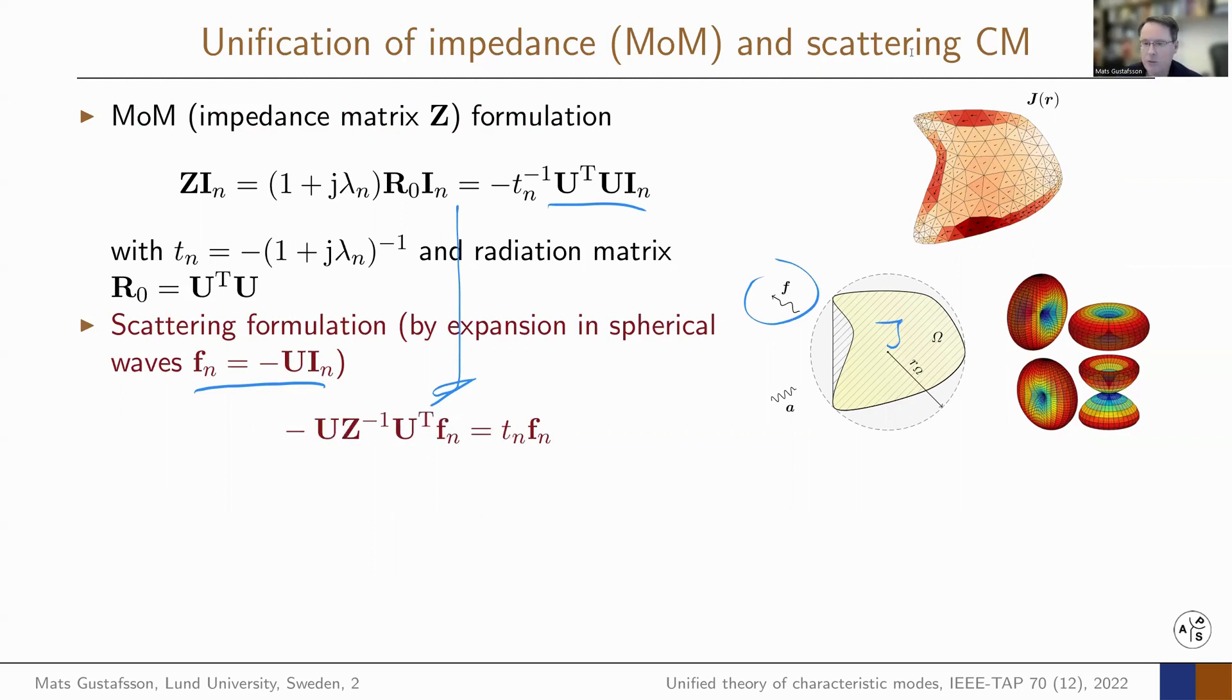This new eigenvalue problem is now formulated here in the expansion coefficients, the outgoing fields. It has an eigenvalue here, T, which is related to the original characteristic eigenvalues.